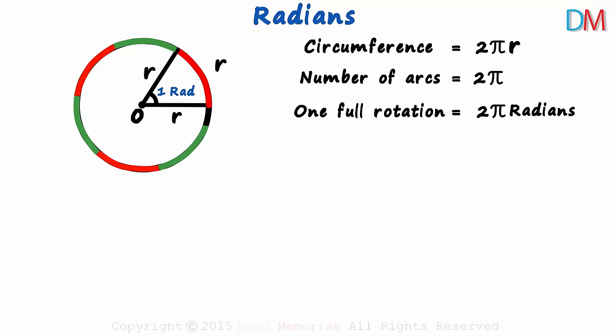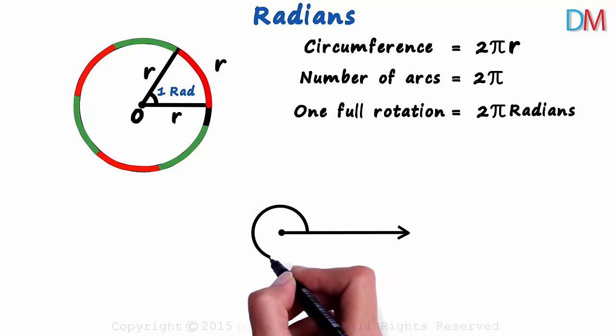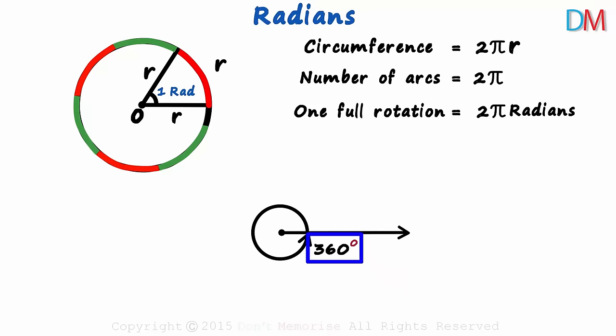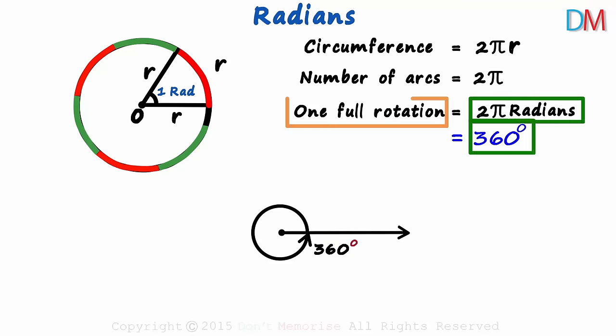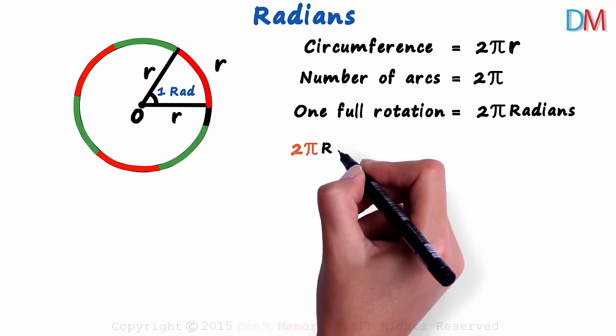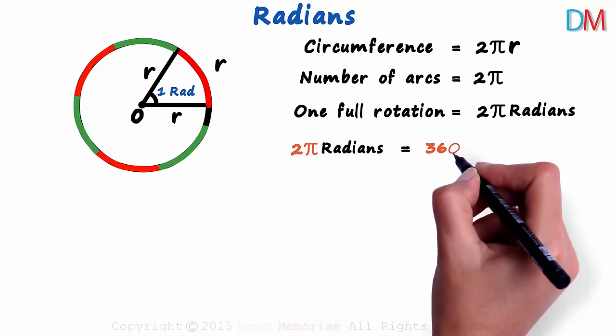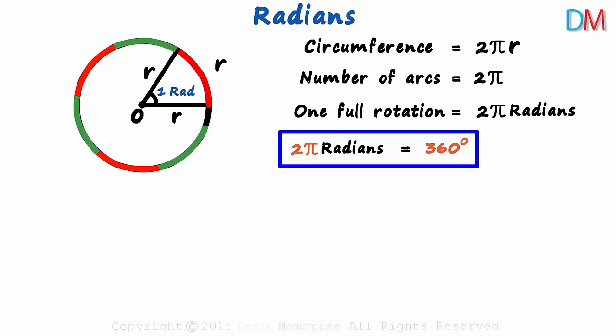But wait, hold on! We also know that 1 full rotation equals 360 degrees. Yes, 1 full rotation equals 360 degrees. As both equal 1 full rotation, these two will be equal. 2π radians will equal 360 degrees. That's the relation between degrees and radians.